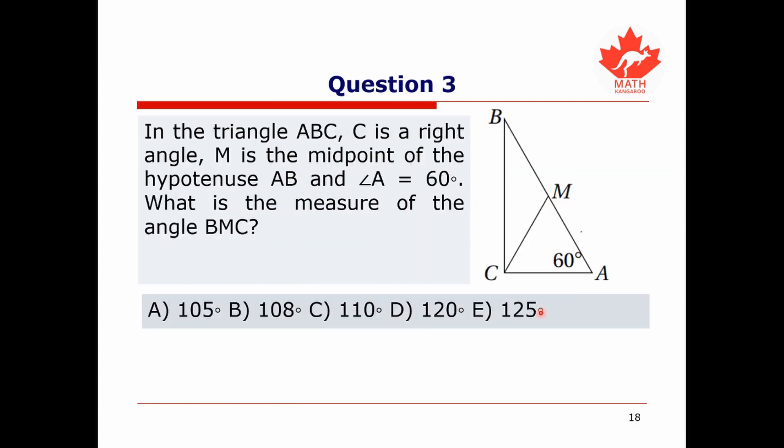Now we're ready for our third and final question. We have a triangle ABC where C is a right angle. M is the midpoint of the hypotenuse AB, and angle A is 60 degrees. We're asked to find the measure of angle BMC.